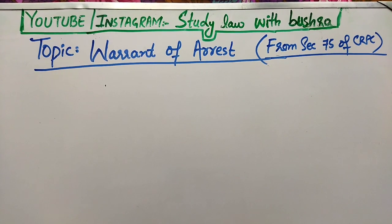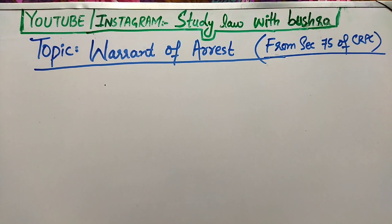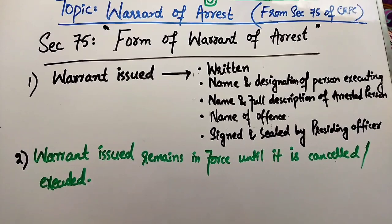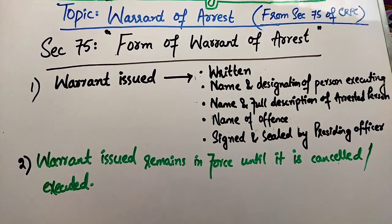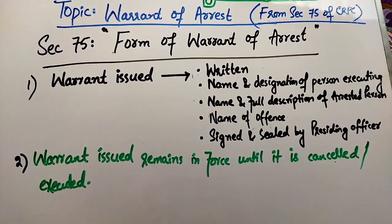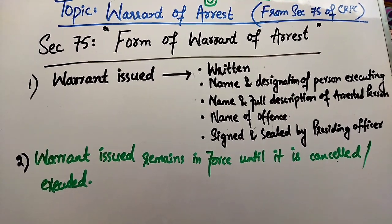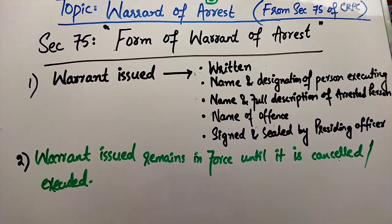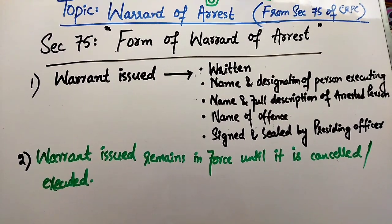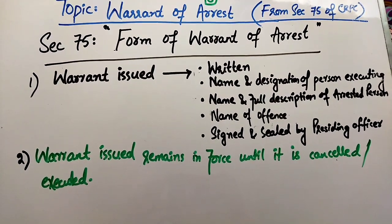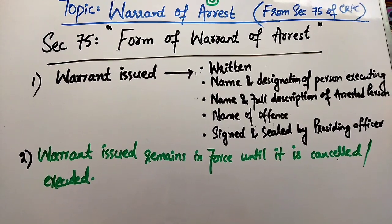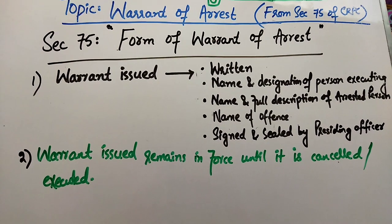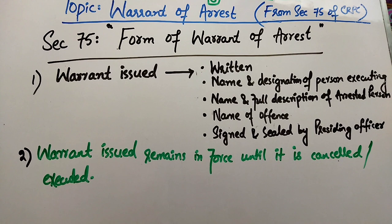Starting from section 75 of CRPC — section 75 deals with Forms of Warrant of Arrest. Section 75 میں دو clauses ہیں. First clause کہتی ہے کہ ہر warrant جو court issue کرتی ہے اس کے لیے کیا ضروری ہے: وہ warrant written form میں ہونا چاہیے.